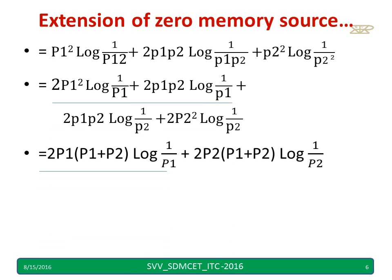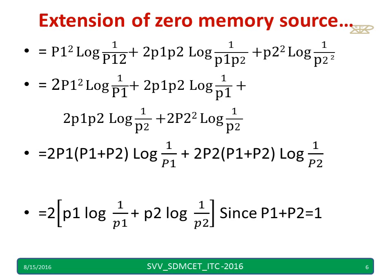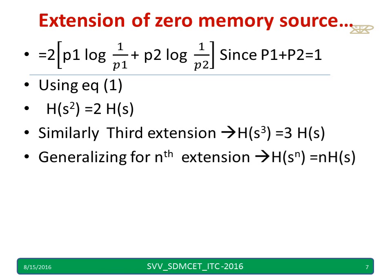Taking 2·p1 common from the first two terms gives 2·p1·(p1 + p2)·log(1/p1). Taking 2·p2 common from the last two terms gives 2·p2·(p1 + p2)·log(1/p2). Since p1 + p2 = 1, this simplifies to 2·[p1·log(1/p1) + p2·log(1/p2)], which equals 2·H(S). Therefore H(S²) = 2·H(S).